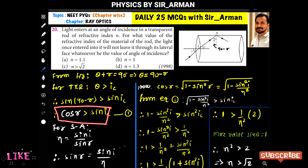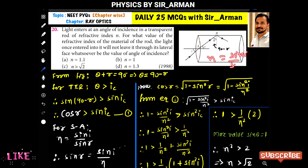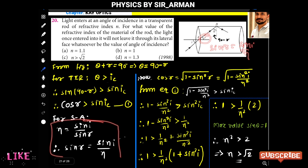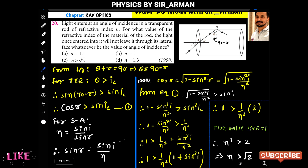Now for surface A, we can apply Snell's law. The refractive index of the inner surface is n, so n equals sin(i) / sin(r). Making sin(r) the subject, we get sin(r) = sin(i) / n, where n is the refractive index.